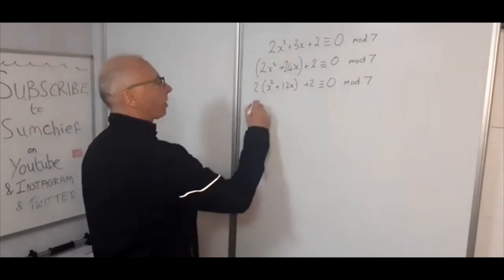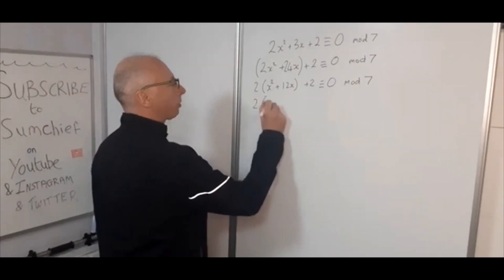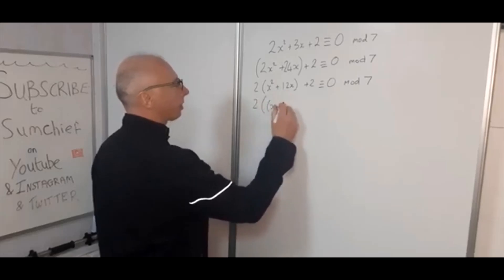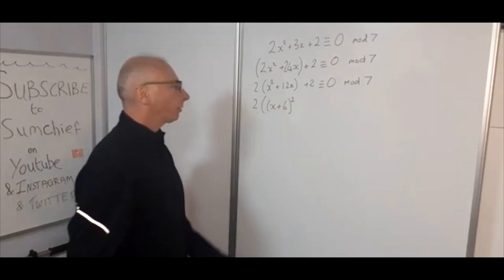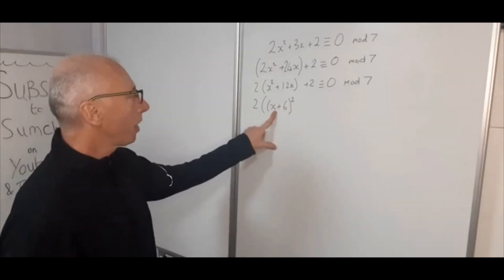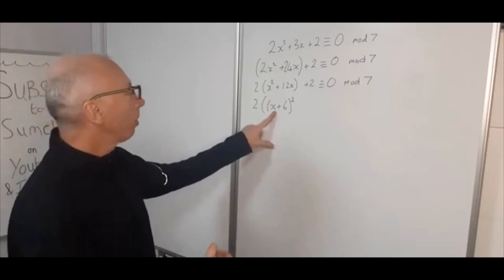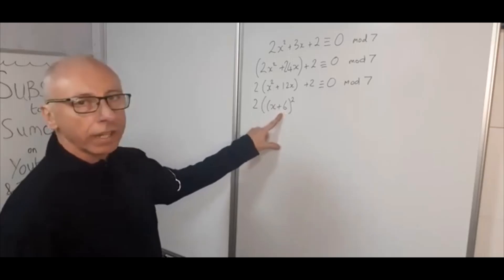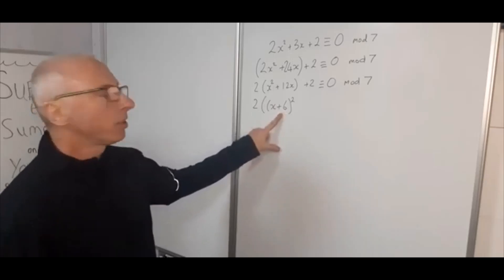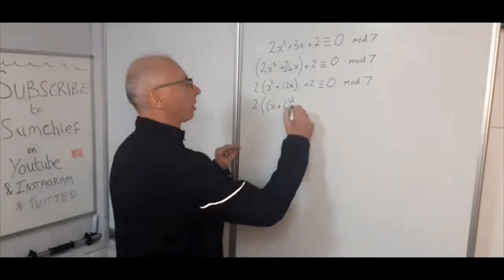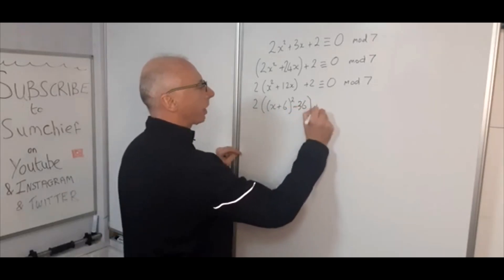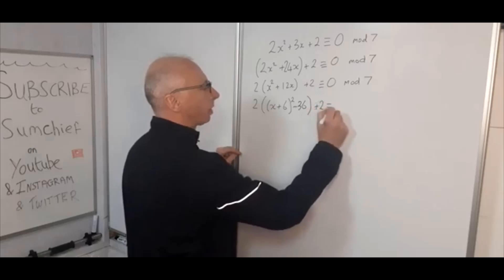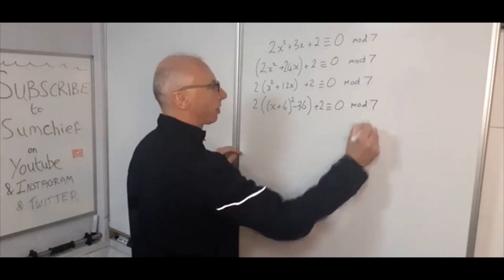Okay, so let's take the square inside. So we've got 2 times x + 6 squared. And now we've changed the value here because when we factor this, when we multiply this out, we'll get x² + 36 + 12x. So basically we've added 36 onto our congruence. So now we need to subtract 36 and then close that in the bracket and then plus 2 is congruent with 0 modulo 7.